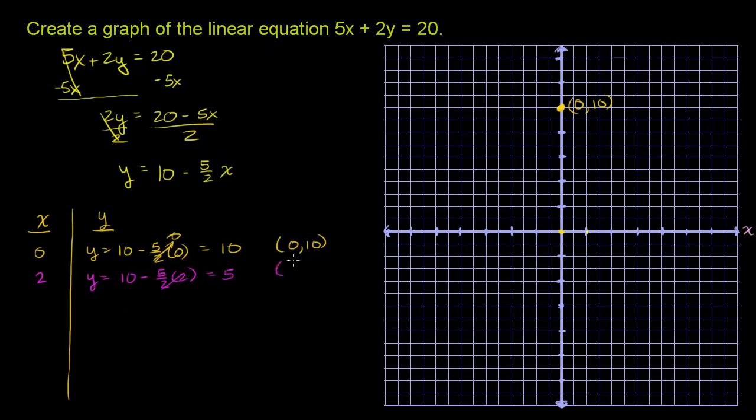So that tells us the point x equals 2, y is equal to 5, is on the line. So x is equal to 1, 2, right over here. And then y is equal to 5. We go up 5. 1, 2, 3, 4, 5, just like that. So that's the point 2, 5.